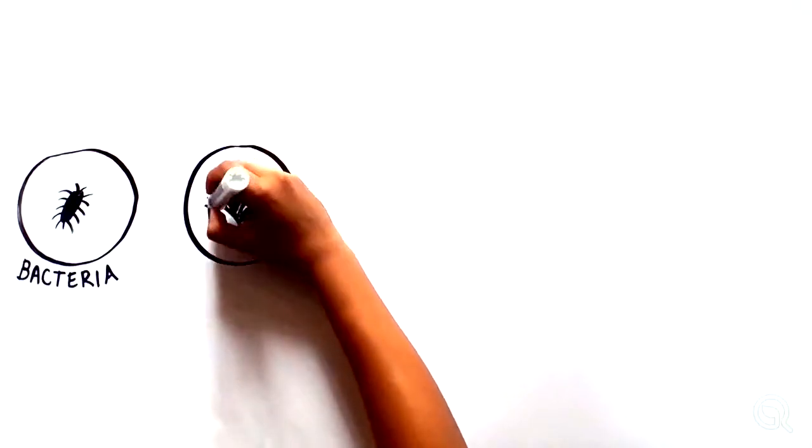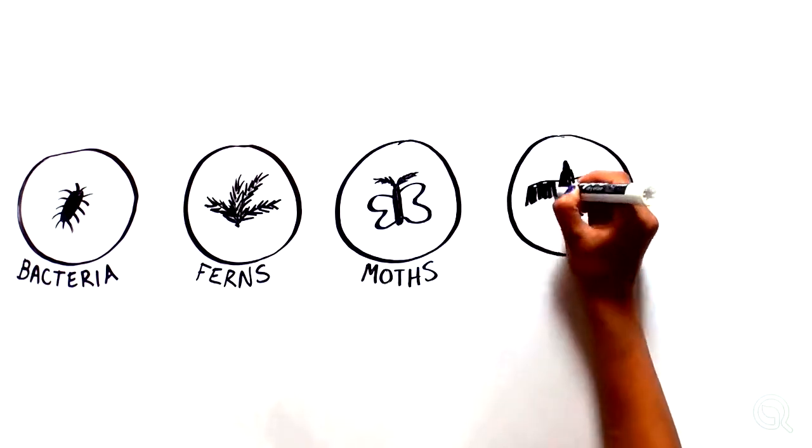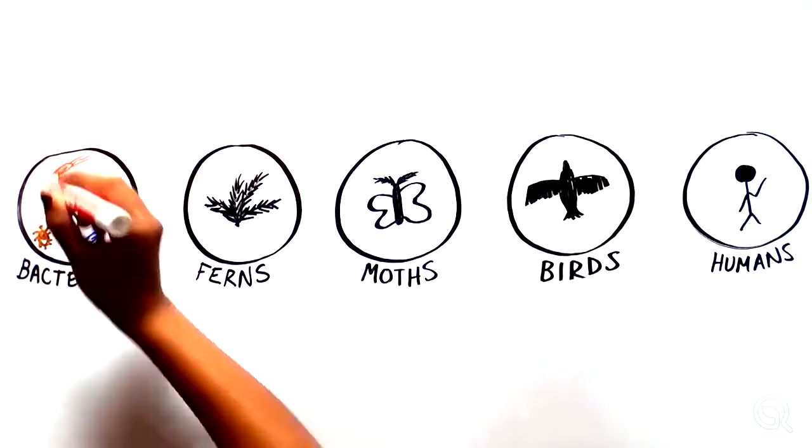Think about the amazing diversity of living things on Earth, ranging from single-celled organisms like bacteria to complex multicellular organisms like ferns, moths, birds, and humans.